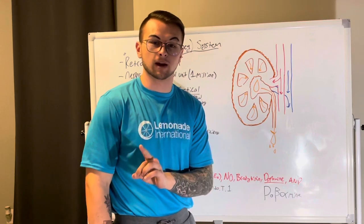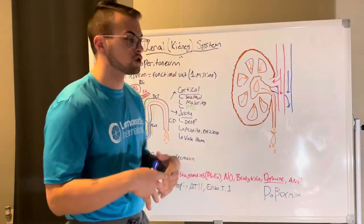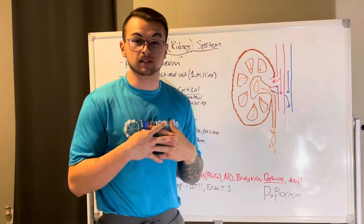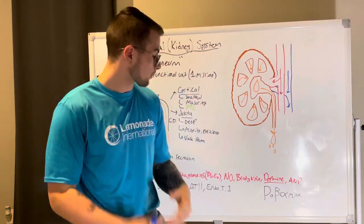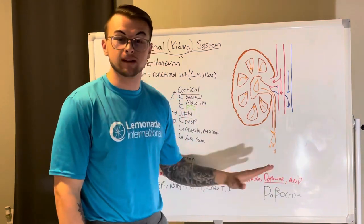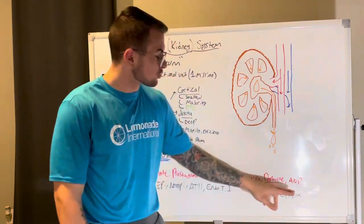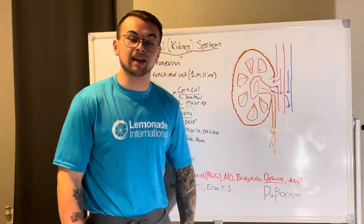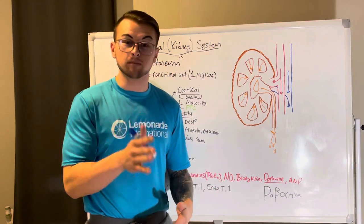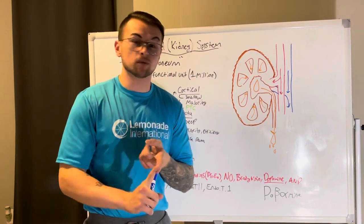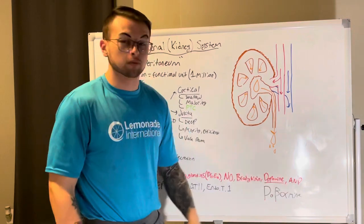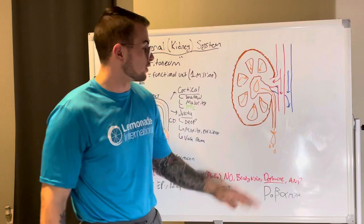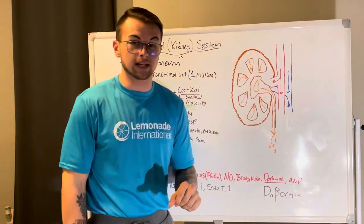Atrial natriuretic peptide is the exact opposite of angiotensin 2 — they have opposite effects. Angiotensin 2 brings blood pressure back up; atrial natriuretic peptide brings it back down. It dilates vessels and gets more blood to the kidneys.